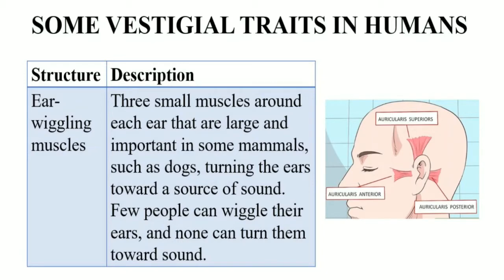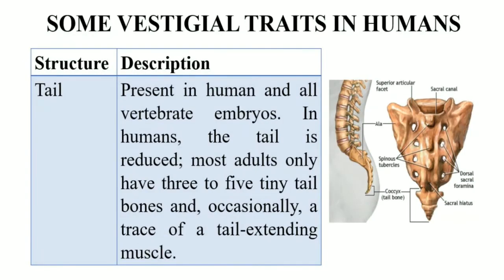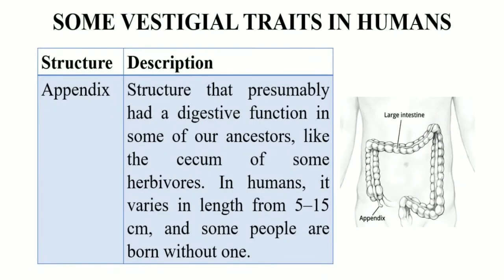In the case of humans, only a few people can wiggle their ears, but they cannot turn them towards any sound source. So ear wiggling muscles are a vestigial trait in humans. Next is the tail — vertebrate embryology has revealed the presence of a tail in all vertebrate embryos, but in adult humans the tail is reduced, and adults only have three to five tiny tail bones. The coccyx, also known as the tail bone, is shown here in the figure, and in some cases a trace of tail-extending muscles has also been detected in humans.